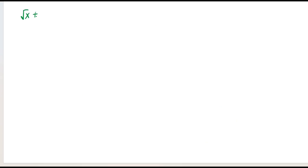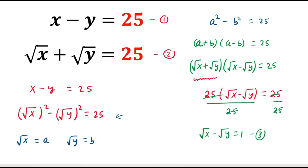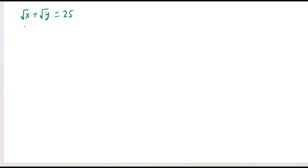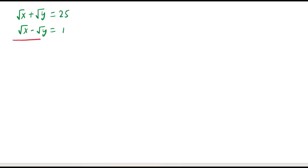Now look carefully at equation number second: square root of x plus square root of y equals 25. If we add equation two and equation three, then the plus square root of y and minus square root of y cancel out, and square root of x plus square root of x gives 2 times square root of x. On the right hand side, 25 plus 1 equals 26.